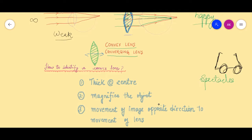Second, whenever we look through a convex lens, it tends to magnify an object — and therefore most magnifying glasses are also made up of convex lenses. Third, whenever we take a convex lens and look at an object through it, and then move the convex lens to and fro, the object will be moving in a direction opposite to the direction of the lens.